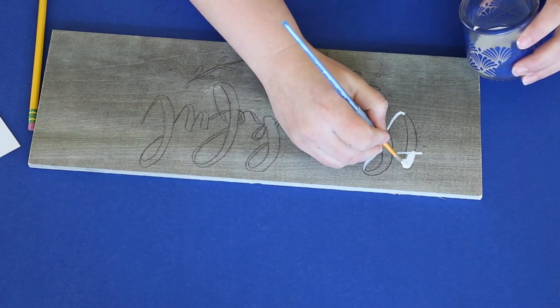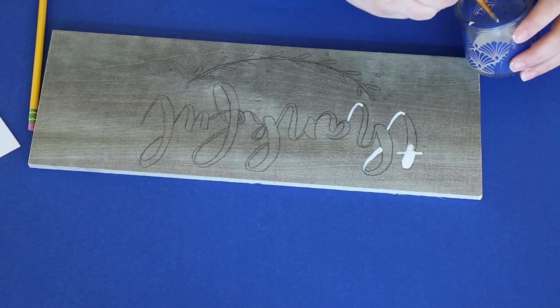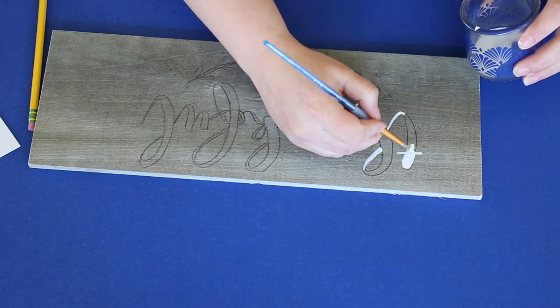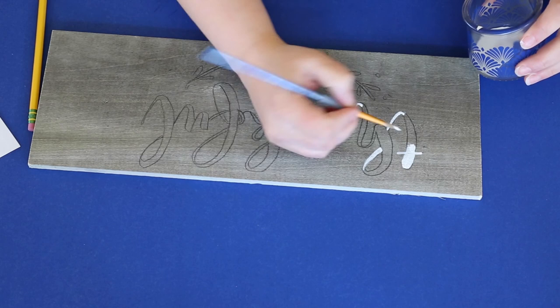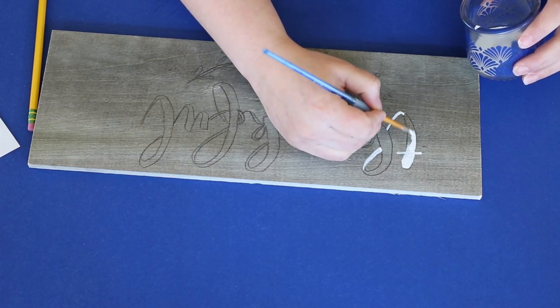Another thing to keep in mind is when you're painting, you want to make sure that you're painting from left to right too, or right to left depending on if you're right-handed or left-handed so that you're not going to smudge your paint on your hand.